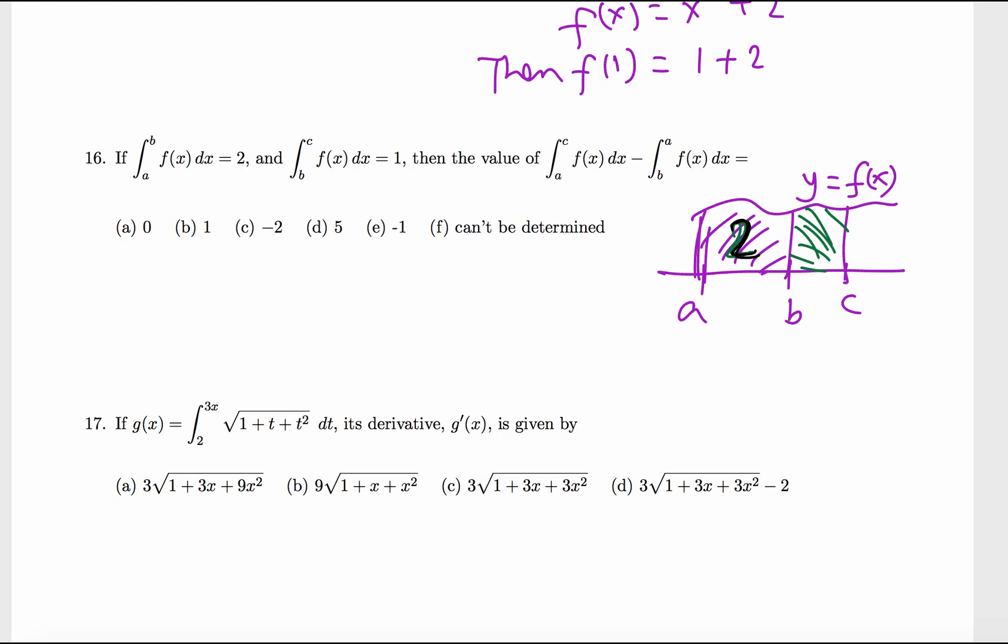We need to find the value of this expression. What is that? a to c f(x), so from a to c, which is 2 plus 1, equals 3. So this integral is 3 minus b to a. b to a means negative of a to b, so b to a f(x) means negative of a to b, and a to b is 2, so b to a will be negative 2. This is 3 minus negative 2, which is 3 plus 2, which is 5.